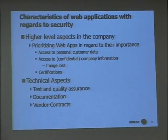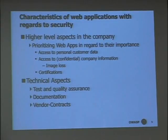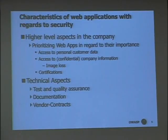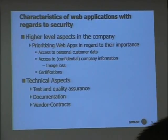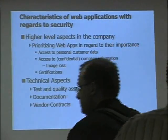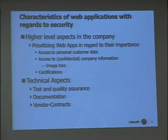Regarding characteristics of applications with respect to security, we divided that into two subtopics. One is the higher-level aspects in the company — basically prioritizing applications by their importance — and that has nothing to do with technical stuff at all. We have customers who say 'we have a thousand applications running all over the company, it's a big corporate, where should we start?' This gives you a small outline: access to personal customer data, for example — if you have a tick there it should be one of the first applications you deal with, or access to confidential company information.